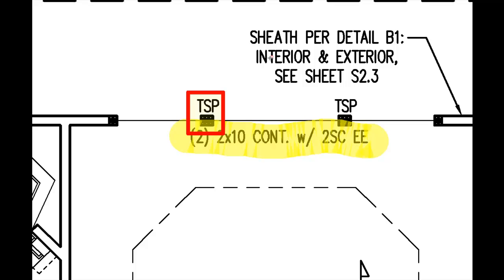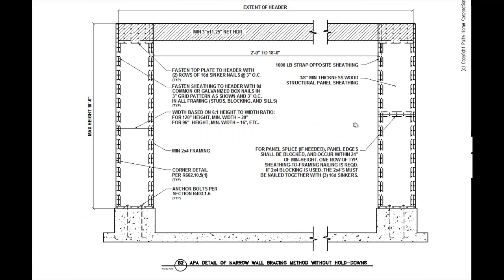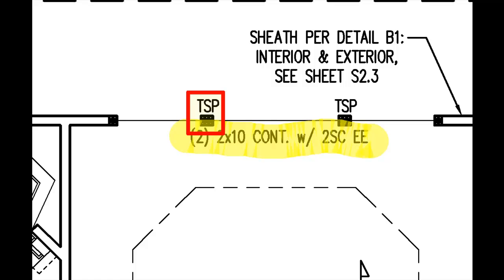The last thing I want to point out here is this detail called out on sheet S2.3. When we go to that sheet, it identifies some particular attachment requirements for the exterior sheathing. Because the wall is so narrow between our outside corner and our first window opening, we have to do some extra attachment in order to beef up the structural component of the wall system there.